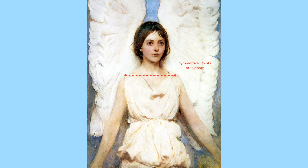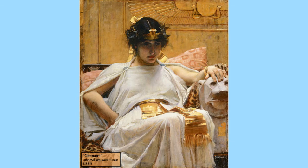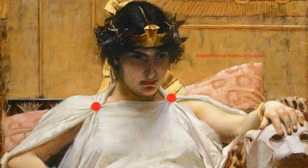Its point of intersection appears symmetrical when the points of support are symmetrical in location. This is evident in Thayer's painting entitled "Angel," whereas in Waterhouse's painting "Cleopatra," one can see that the points of support are slightly offset, as the clavicle is slightly tilted in this seated pose, causing the point of intersection to be off-center and asymmetrical.